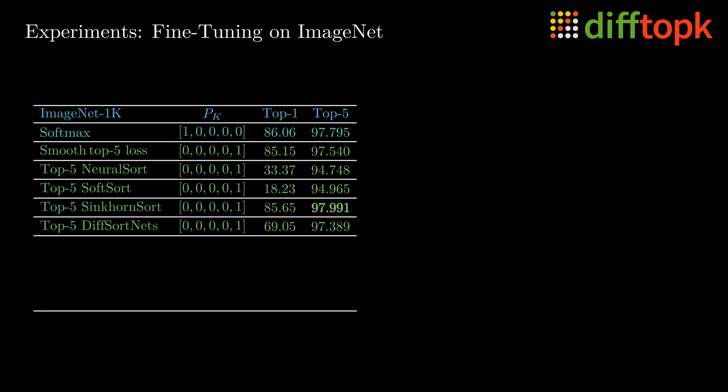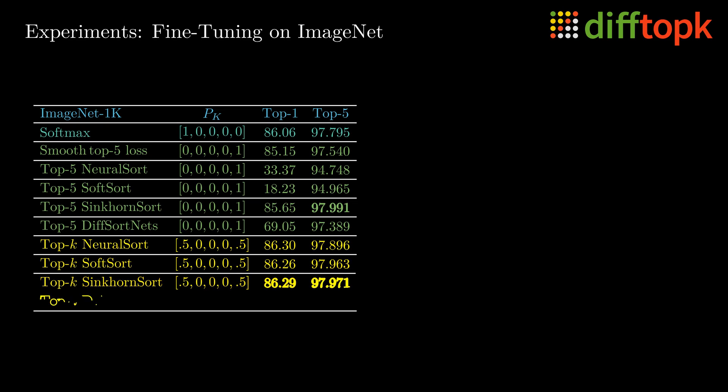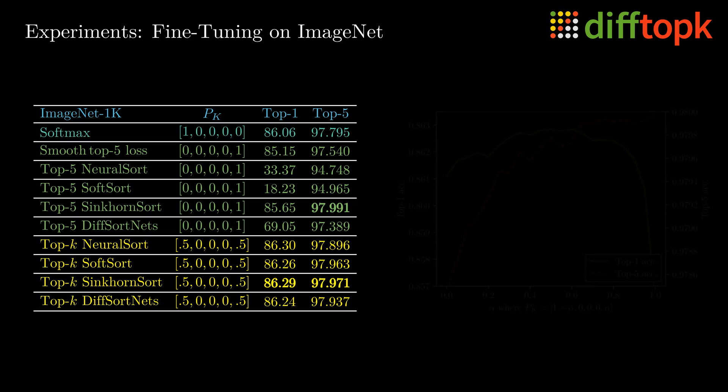This is because the model is not incentivized to return the highest score for the ground truth class, but instead that the ground truth class is among the top 5 ranks. We apply the proposed method in a setting where PK is such that K equals 1 with 50% probability and K equals 5 with 50% probability. We observe that the top 1 accuracy improves in each setting and the model becomes more robust.